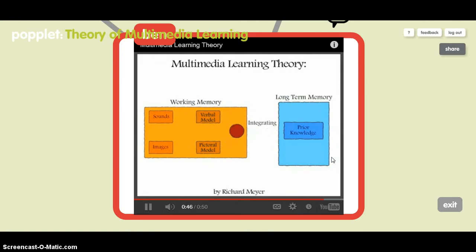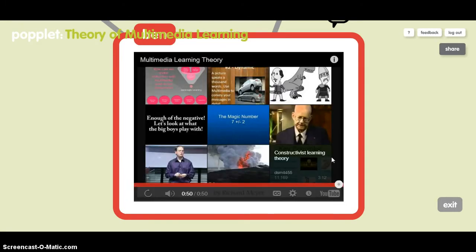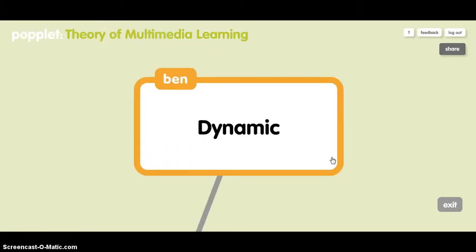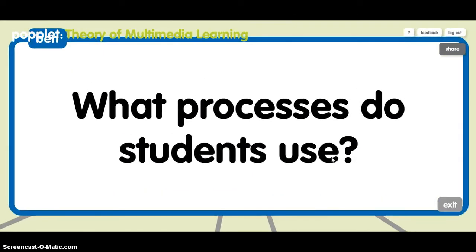That's a brief summary of multimedia learning theory. With all those different boxes, it might seem that things are a bit disconnected, or that the audio and visual components of multimedia learning are separate. But part of what Mayer says is that the process is more dynamic. So what processes do students actually use to process the information?